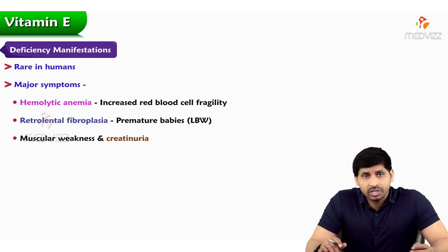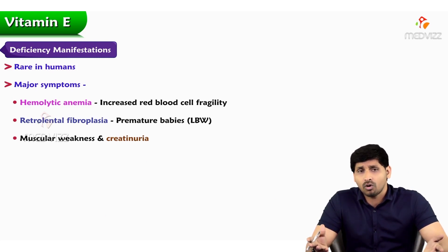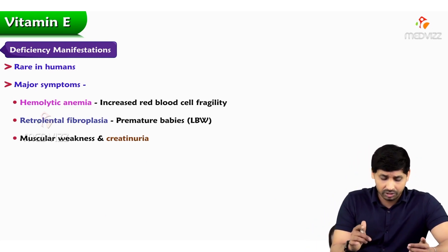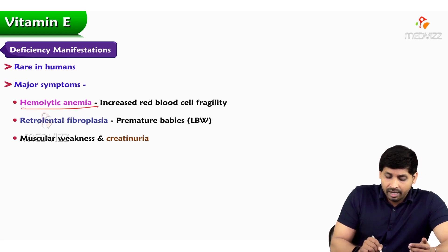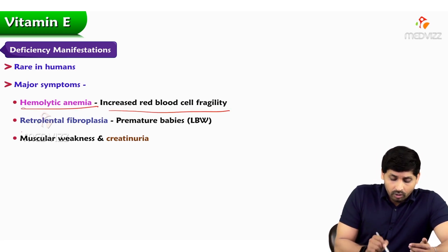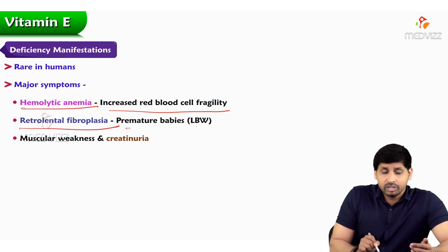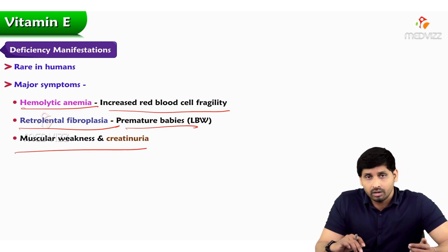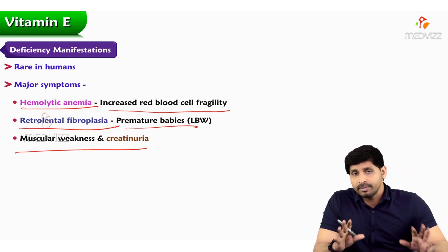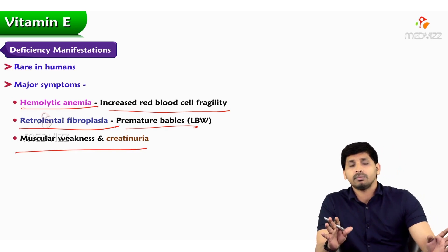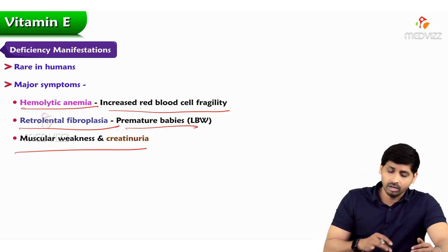Deficiency manifestations are very rare in humans because we consume a lot of oils, and all oils are rich in vitamin E. However, major symptoms in case of deficiency include hemolytic anemia — increased red blood cell fragility — retrolenticular fibroplasia seen in premature babies, and muscular weakness with creatinuria, because vitamin E maintains creatinine storage in muscles. Without vitamin E, creatinine will not be stored in muscles and will simply be excreted in the urine.